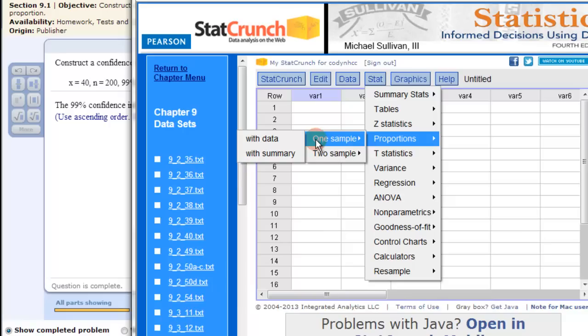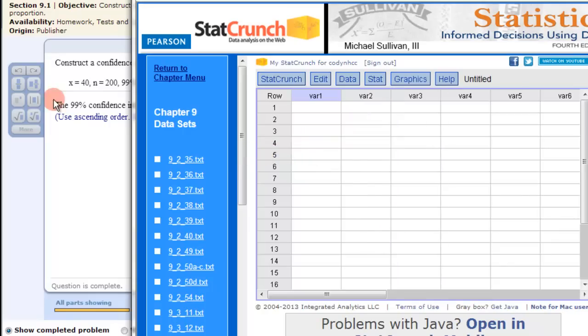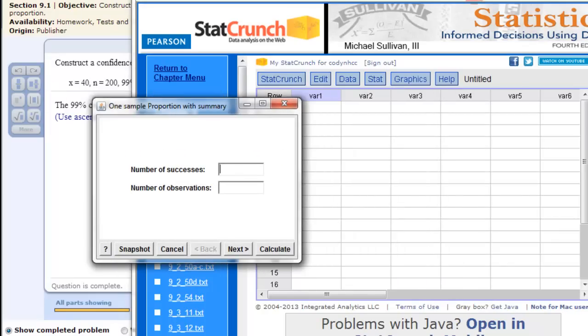Now with data would be just pure data, like information where you have 20 pieces of data or 100 pieces of data. But we have a summary because it just gives us the information here. So you choose that. Then the calculator basically comes up here.